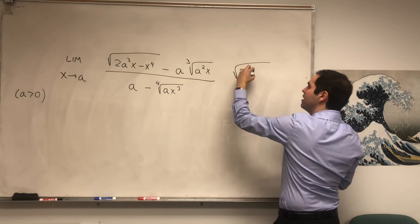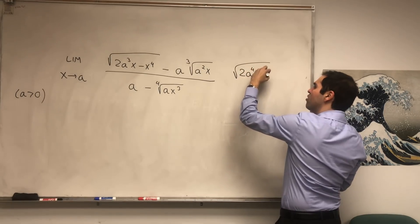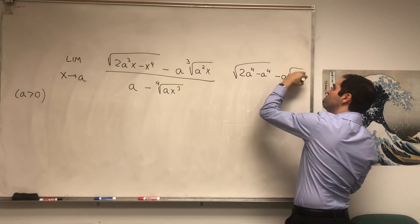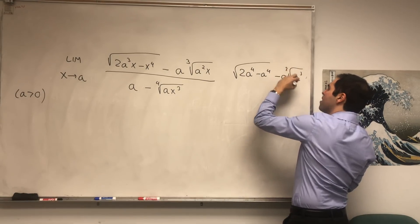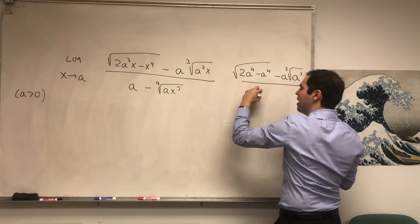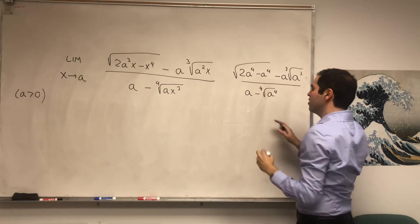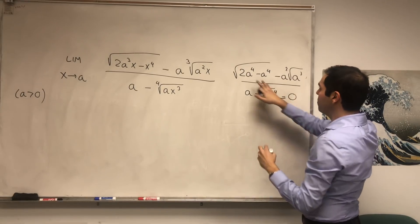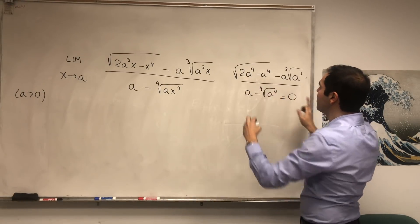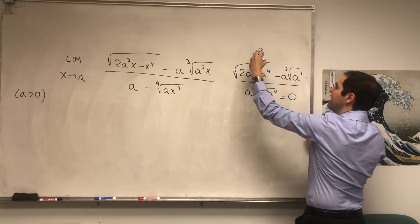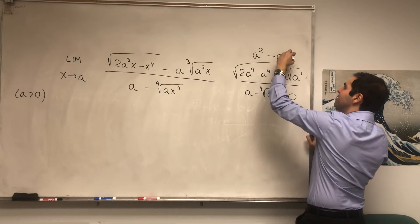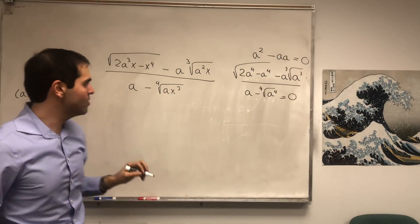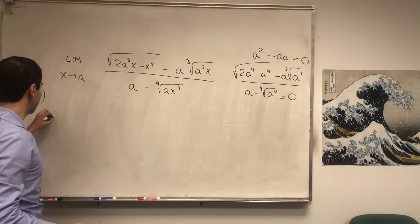So if we naively plug in, you get 2a to the fourth minus a to the fourth minus a cube root of a cubed over a minus fourth root of a to the fourth. So that becomes a minus a, which is zero. That becomes square root of a to the fourth, which is a squared, and then minus a times a, which is zero. So this is indeed of the form zero over zero, which means we can L'Hôpital this.